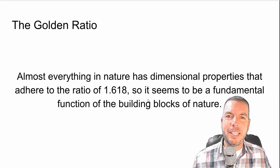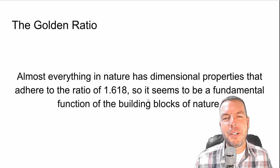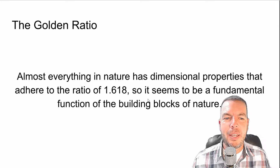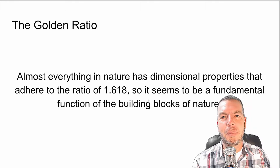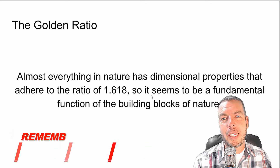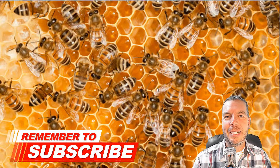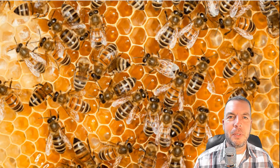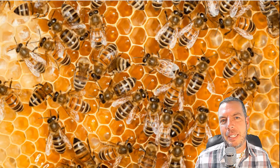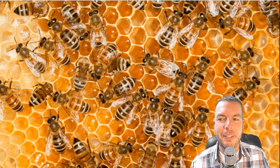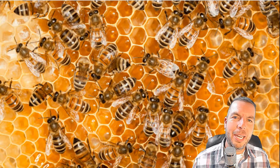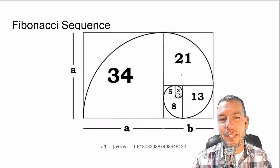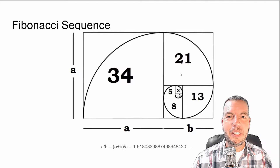Almost everything in nature has dimensional properties that adhere to this ratio of 1.618. The fundamental function of the building blocks of nature is basically this Fibonacci sequence and golden ratio. For example, if you divide the female bees by the male bees in any given hive, that will give you 1.618. Crazy, right? The Fibonacci sequence is in nature — it's in everything.